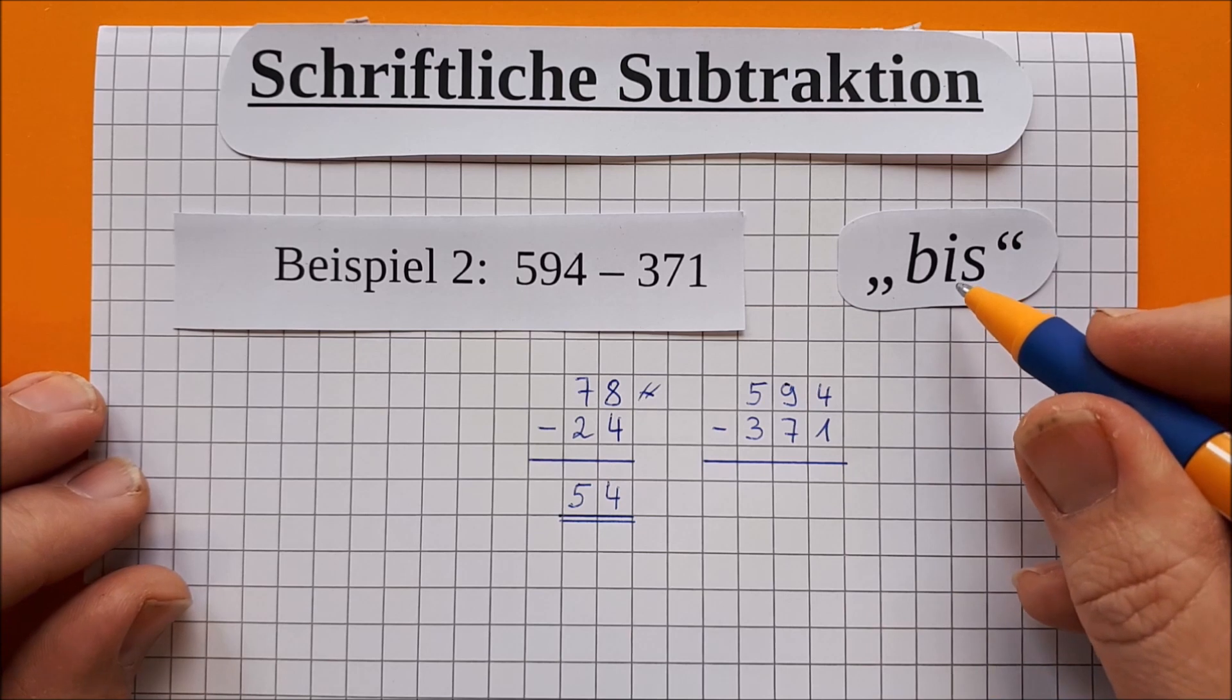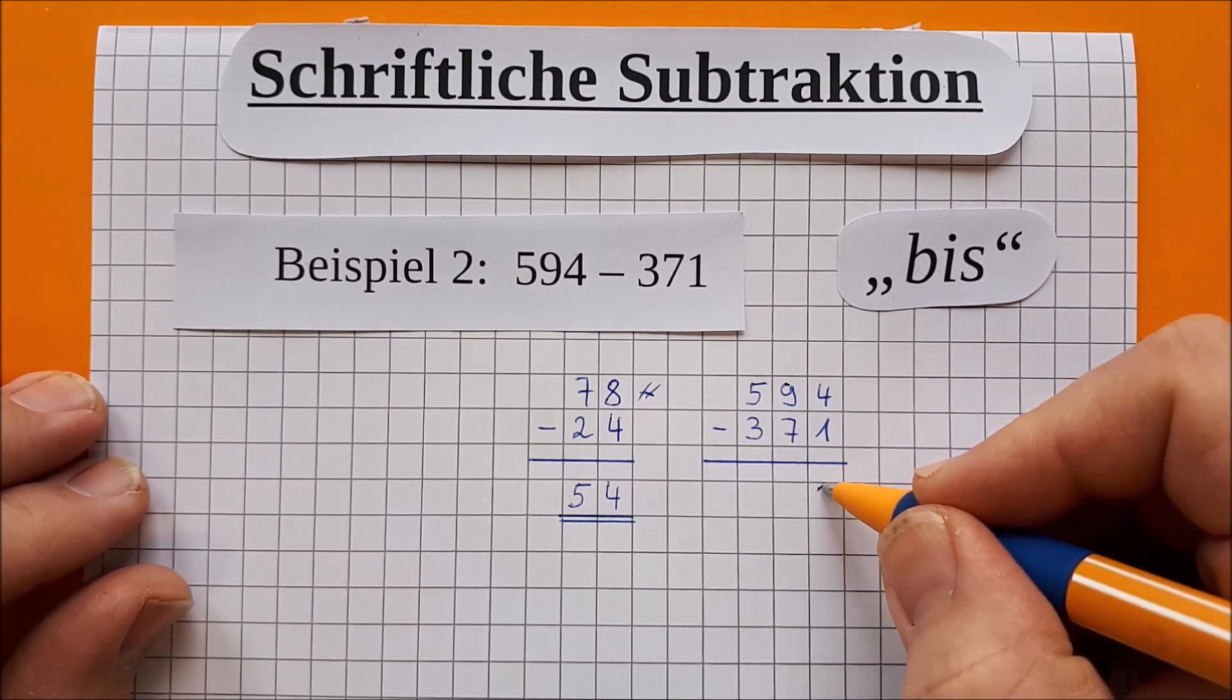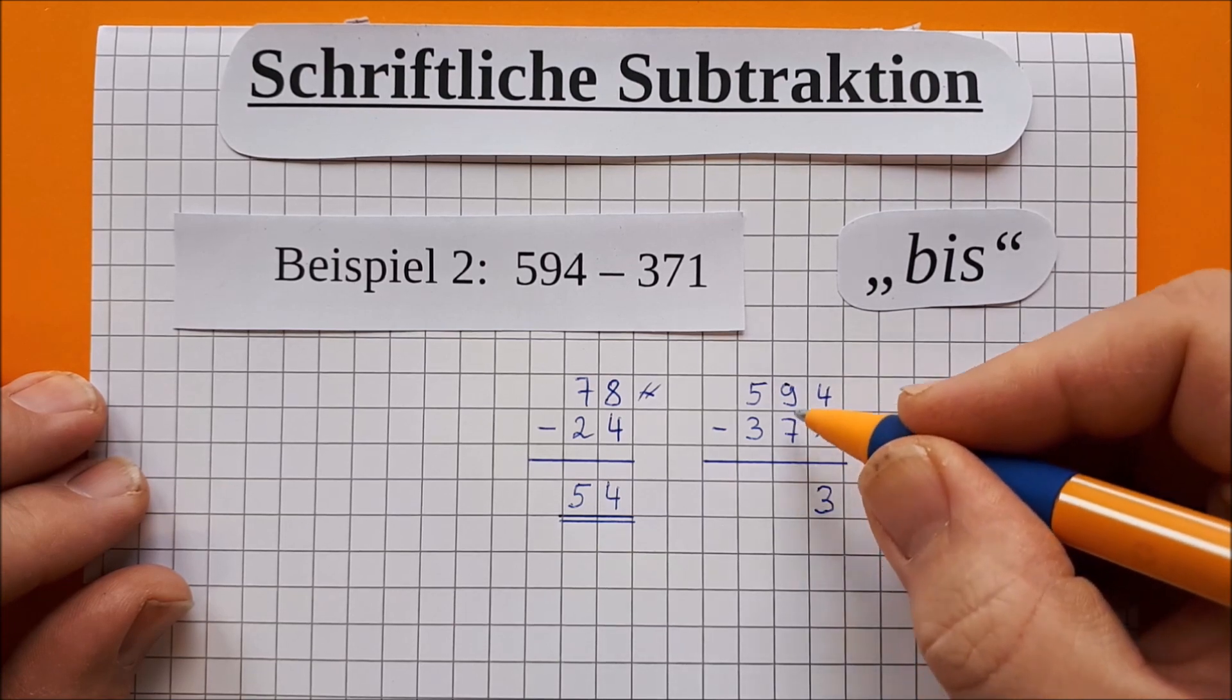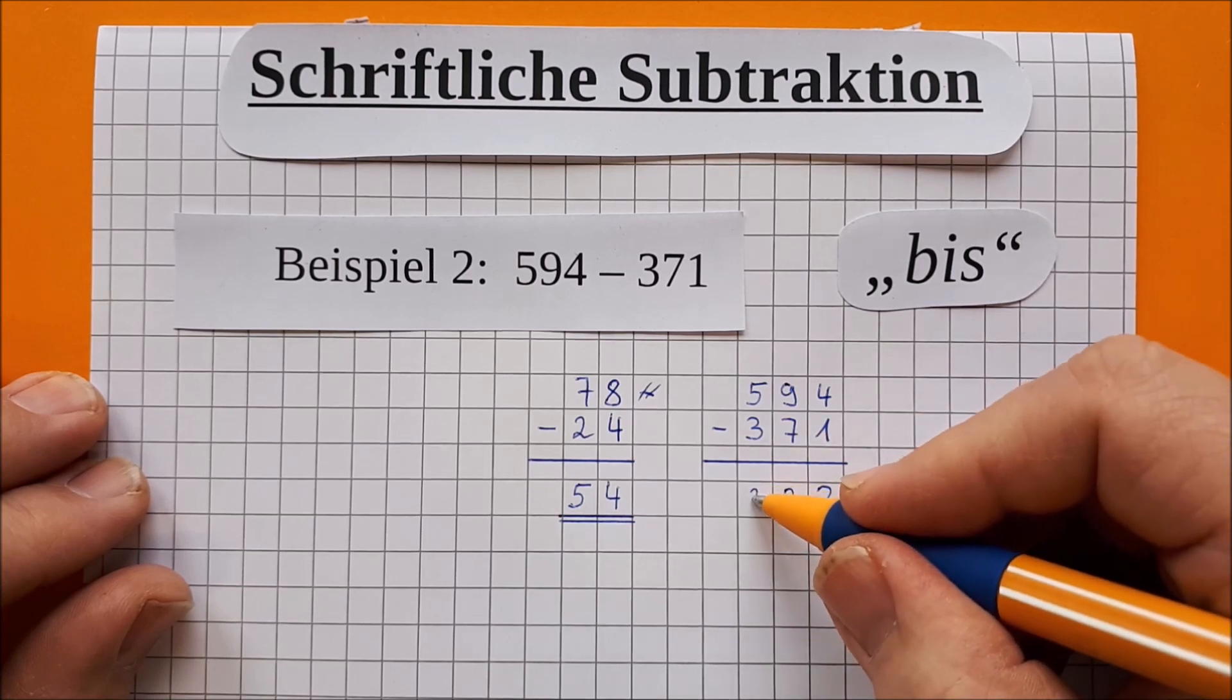So, das Zauberwort heißt wieder bis. Also von der 1 bis zur 4 sind es 3. Von der 7 bis zur 9 sind es 2. Und von der 3 bis zur 5 sind es auch 2.